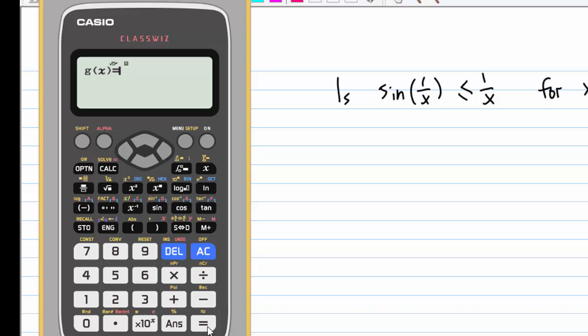Now g(x) can start and enter 1/x, alpha x, then equal, then the same table range.